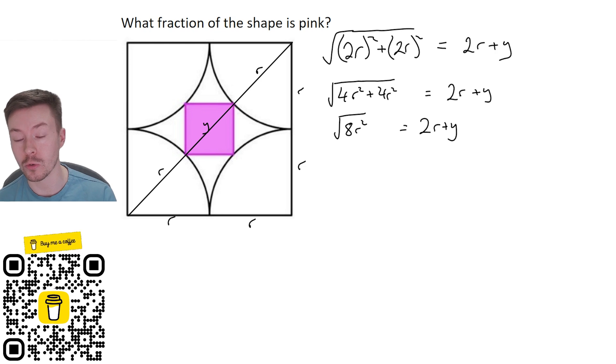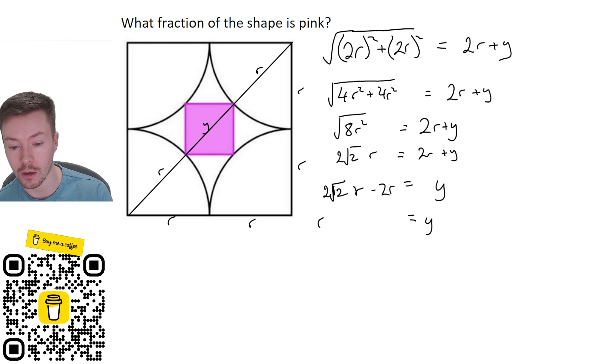Square rooting 8 I get 2 root 2, square root of the r squared I get r, so I end up with 2 root 2 lots of r is equal to 2r plus y. Now I want to work out actually what y is here, so I'm going to subtract 2r from both sides and I get that y is equal to 2 root 2r minus 2r, which I can simplify that to being, by factorizing out my r, 2 root 2 minus 2. That's y.